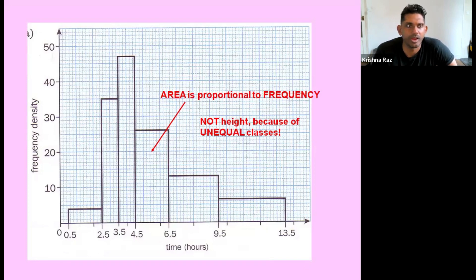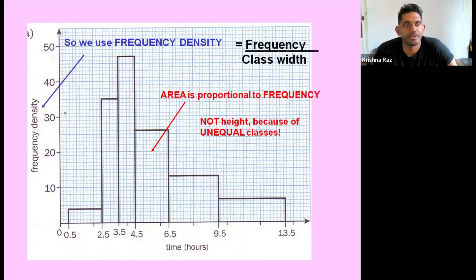Like I said, it's the area. So if you look on the y-axis, you probably notice we have a frequency density instead of frequency. So we use frequency density instead of frequency. And you're probably wondering what that is. And it is the frequency divided by the class width.